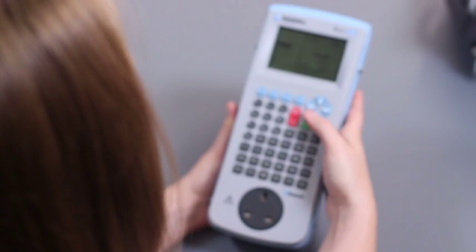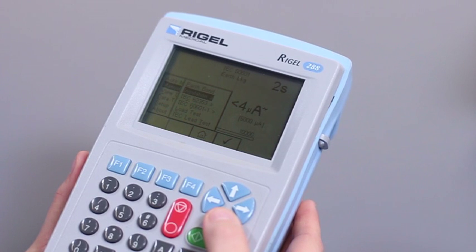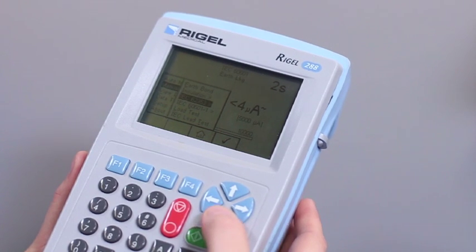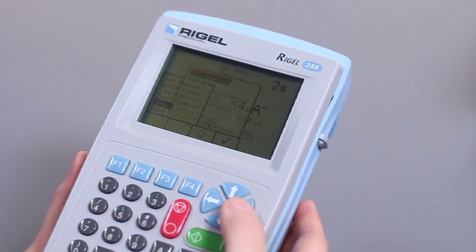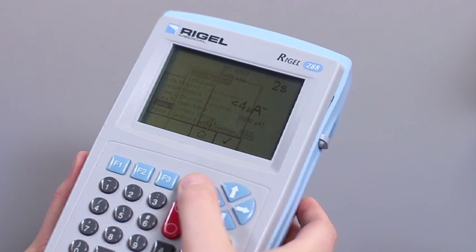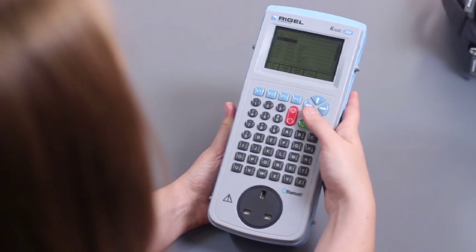Providing true versatility in a single handheld unit, the 288 includes earth bond and insulation tests as well as leakage tests, conforming to several international standards, including IEC 62353, IEC 60601-1, NFPA-99, and other local variants.